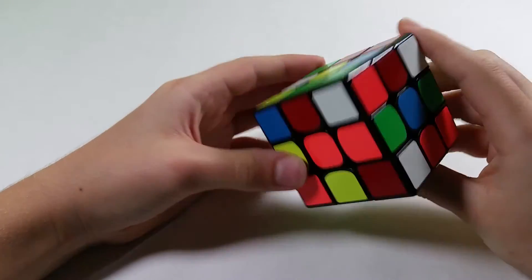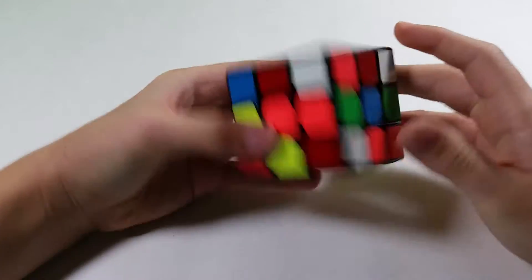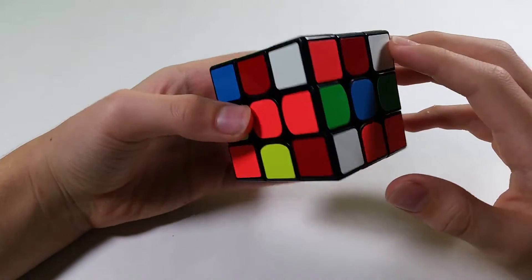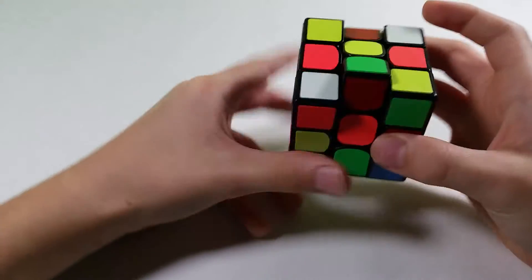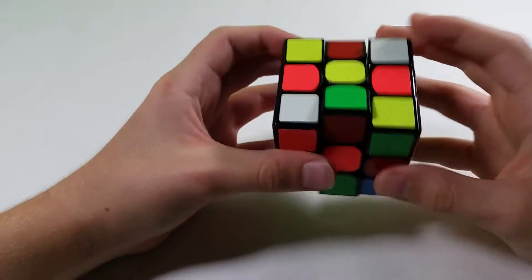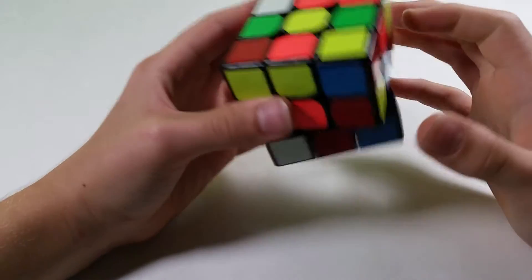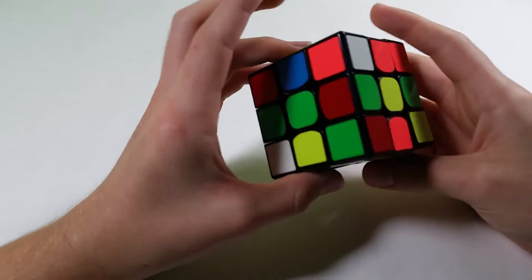So again, white cross looks pretty easy, so I can solve it like this, with D, R, L2. We'll solve these three edges, and then I can just insert this one into a D2 to make a cross.